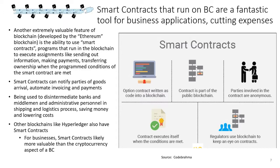Smart contracts are in some ways as important as — and in some applications more important than — other blockchain advantages. They're very useful in insurance policy applications, where the claims process can take a lot of time with lots of manual operations, but many of those are now being automated with smart contracts. Smart contracts are also being used for trade finance and letters of credit issuance, replacing a lot of paperwork, manual processes, errors, delays, and expenses.